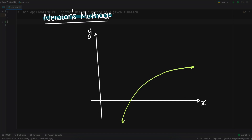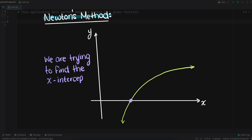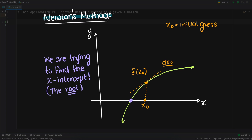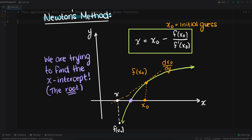Let's say that we have a function that looks like this, and we are trying to find where this nonlinear equation crosses the x-axis. We must first start with an initial guess as to where we think the intersection point might be, so let's say it's here at x. Using our function, its derivative, and our initial guess in the following formula, we can work our way iteratively towards the x-intercept.